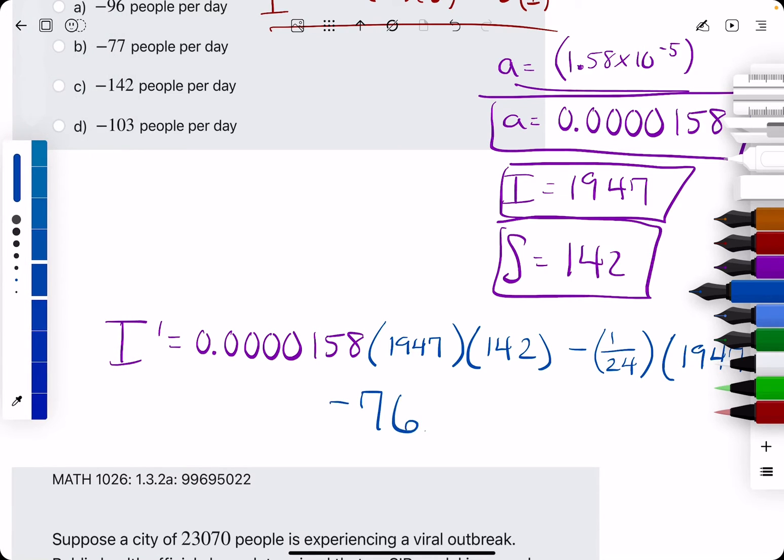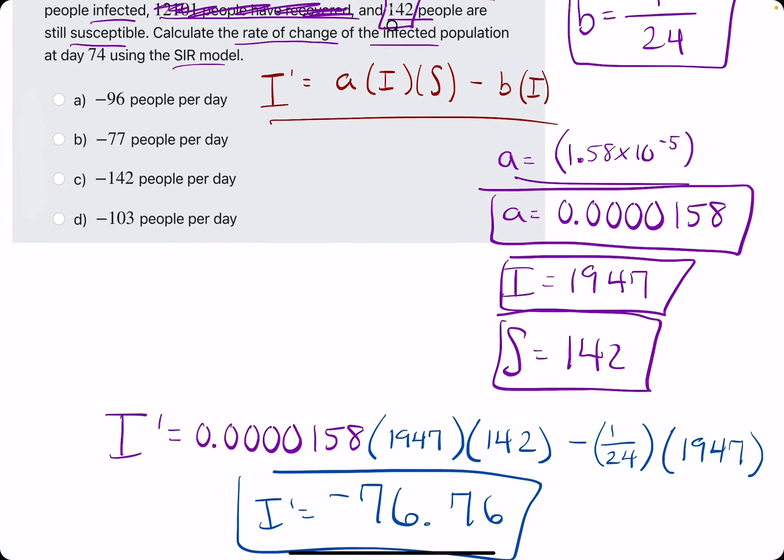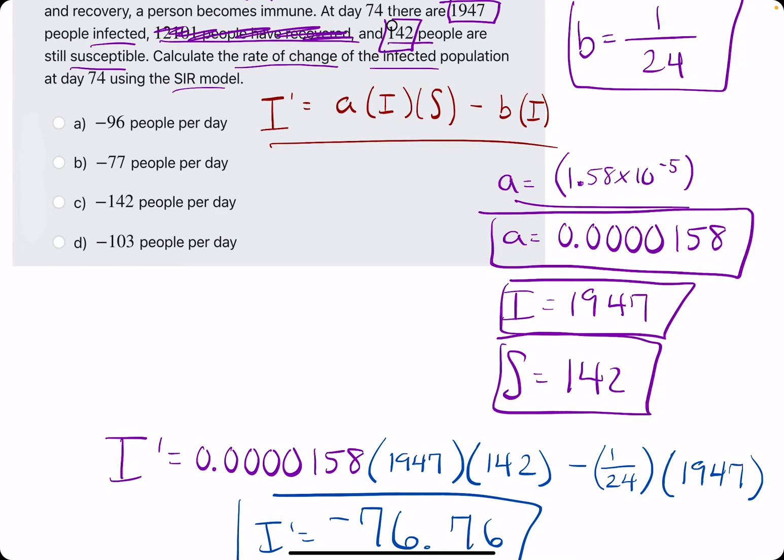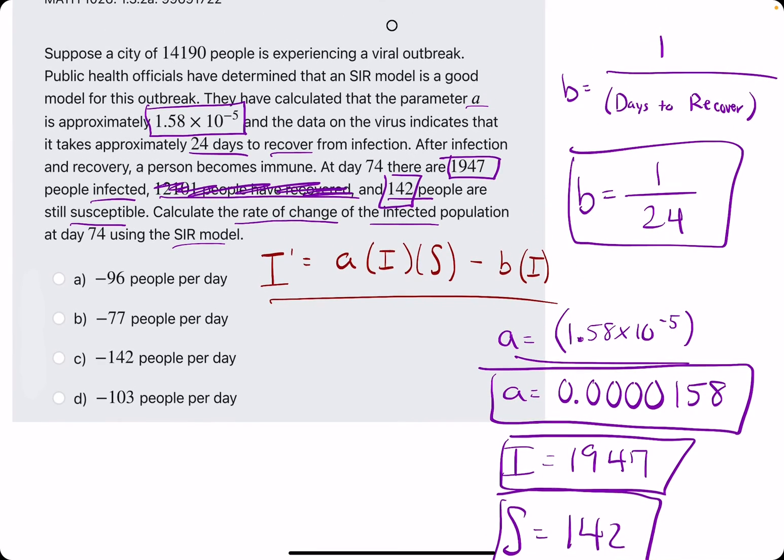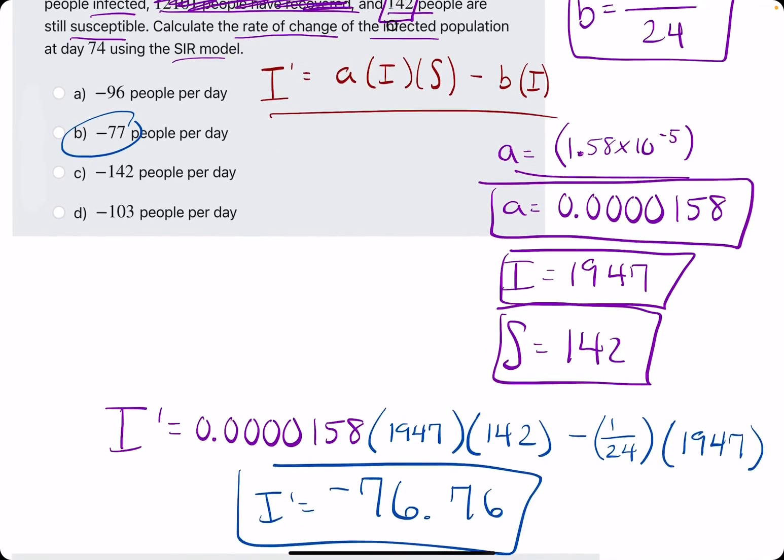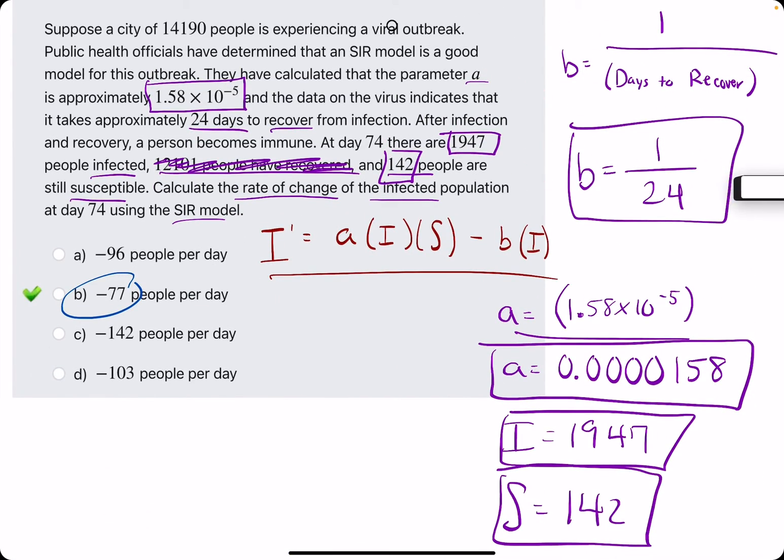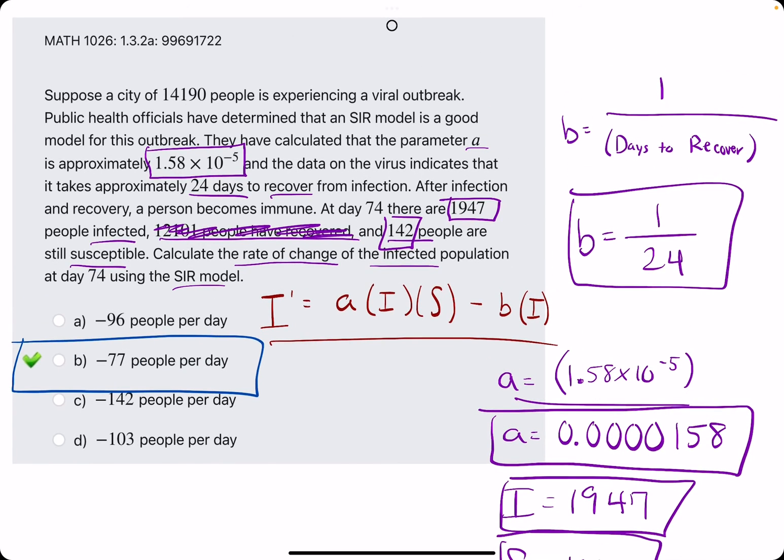Negative 76.76 is equal to I prime. So it should be equal to the number of people that are infected. It's the rate of change of the infected population at day 74. So negative 77 is our closest answer. Let's break out the eraser and see that B is, in fact, our answer.